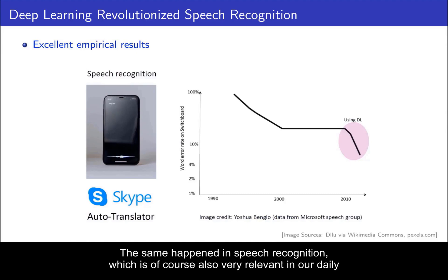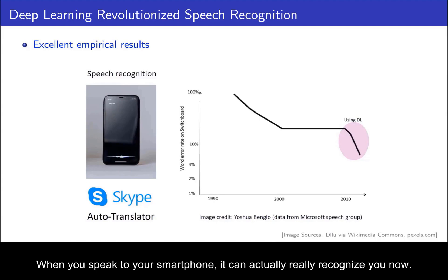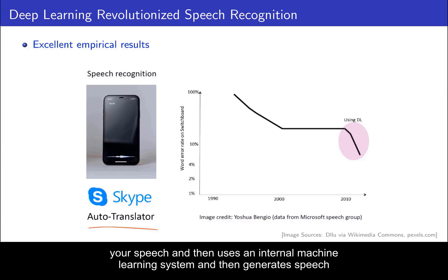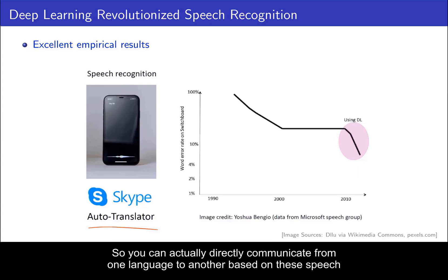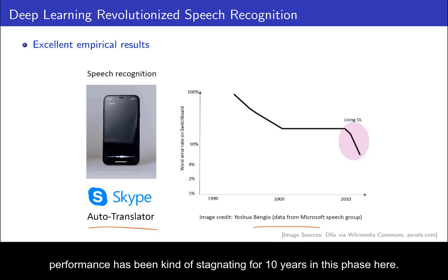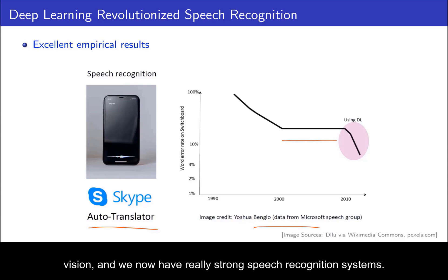Computer vision is not the only field that has been revolutionized like this. The same happened in speech recognition, which is of course very relevant in our daily lives. When you speak to your smartphone, it can actually really recognize you now, enabling applications such as the Skype Auto Translator, which recognizes your speech, uses an internal machine learning system, and then generates speech in another language. For speech recognition there's the benchmark Switchboard, and on this benchmark performance had been stagnating for about 10 years — but then, based on deep learning, performance quickly improved, just like for computer vision, and we now have really strong speech recognition systems.